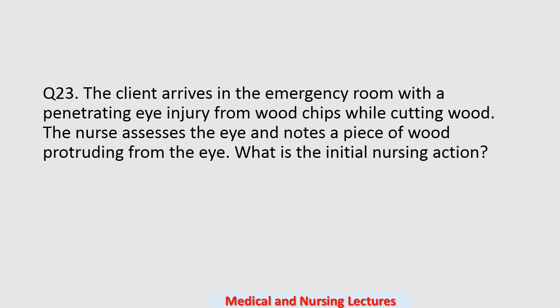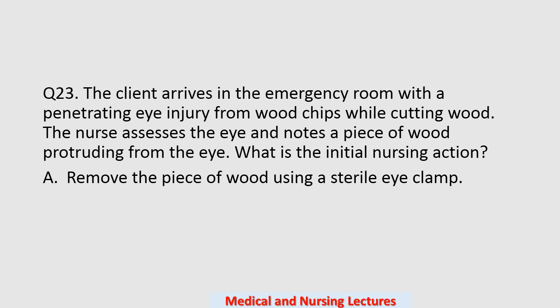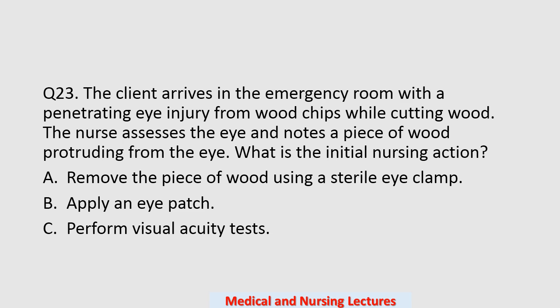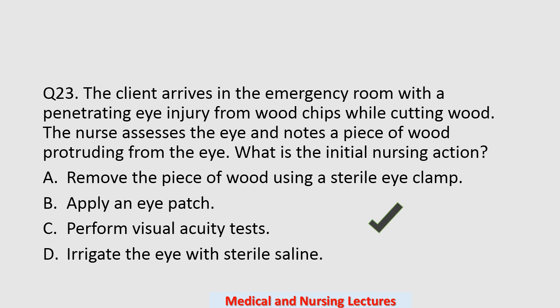Question number twenty-three: a client arrives in the emergency room with a penetrating injury from wood chips while cutting wood. The nurse assesses the eye and notes a piece of wood protruding from the eye. What is the initial nursing action? Options are: remove the piece of wood using a sterile eye clamp, apply an eye patch, perform visual acuity tests, or irrigate the eye with sterile saline. The correct option is C: perform visual acuity tests.